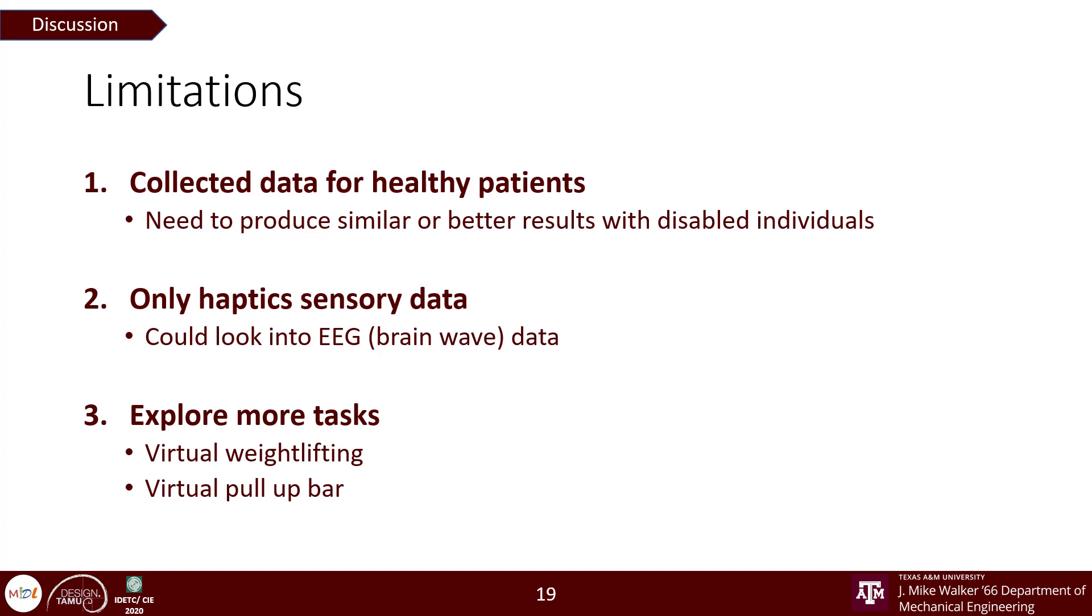Currently, we explored only one task which was pulling a virtual spring, but we could also explore different joint space symmetries in different directions for tasks like weightlifting and pull-up bars.